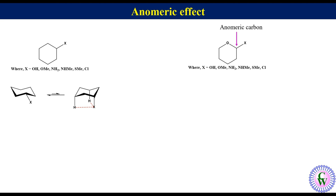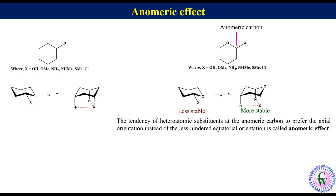Thus, in this case the chair conformation with axial substituent is more stable than the chair conformation with equatorial substituent, despite the presence of 1,3-diaxial interaction in the chair conformation with axial substituent. The tendency of heteroatomic substituents at the enumeric carbon to prefer the axial orientation instead of the less hindered equatorial orientation is called the enumeric effect.